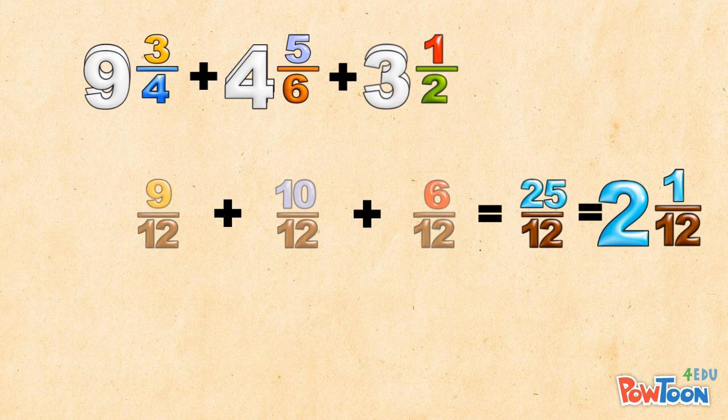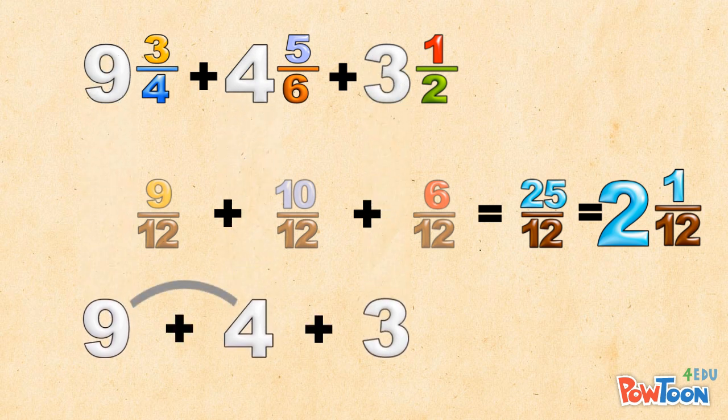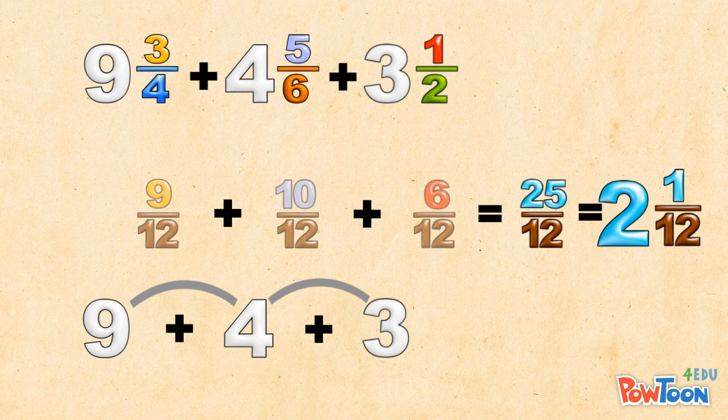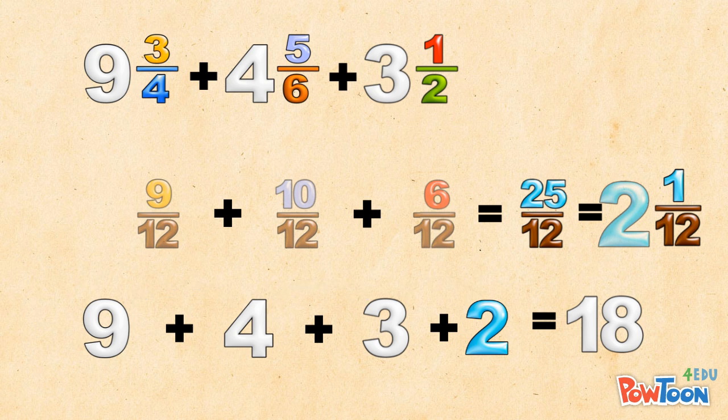Now we add the whole numbers. 9 plus 4 is 13, plus 3 is 16, plus the 2 from the mixed number, that's 18. Our final answer is 18 and 1 twelfth.